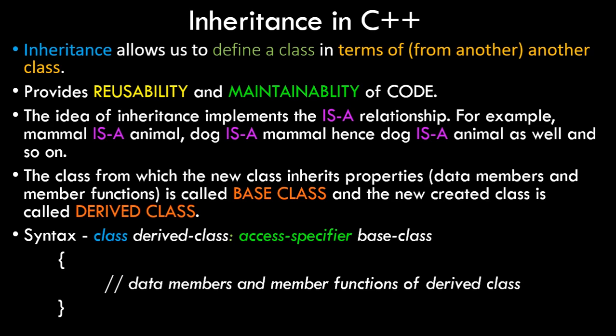The idea of inheritance implements the IS-A relationship — for example, mammal is an animal, dog is a mammal, hence dog is an animal. The class from which the new class inherits properties is called the base class, and the new class created from it is called the derived class. The syntax is: write the derived class name, then a colon, then the access specifier, then the base class name. Only public and protected properties of the base class will come into the derived class — private members are not accessible.